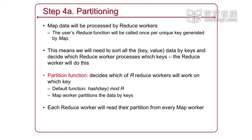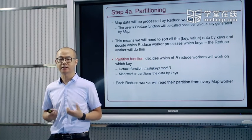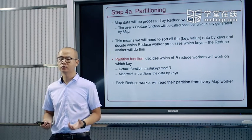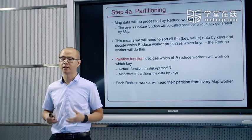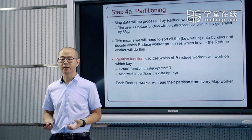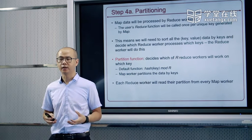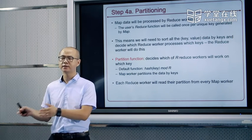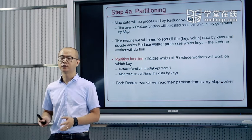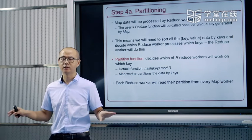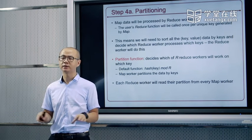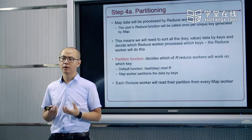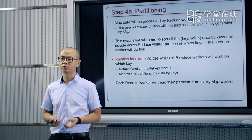Map和Reduce之间通过partition的过程连接起来。partition函数决定了中间生成的这些key应该到哪一个reducer上去。在默认配置下，通常是通过一个哈希函数对R取模来生成partition的key。它的用处是让中间的key比较随机地分散到各个reducer上去，从而在reducer的服务器之间达到相对均衡的任务分配。